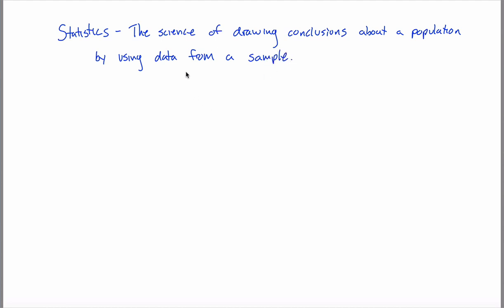So in every question in this class, what will happen is we'll have a question, and the question will be about a population. As I'll explain in a minute, we won't be able to answer that question directly because of some property of a population. So what we'll do is find a sample that's related in some way to this population, study that sample, get some data about it, and use that data to answer the original question. Maybe this makes more sense with an example.